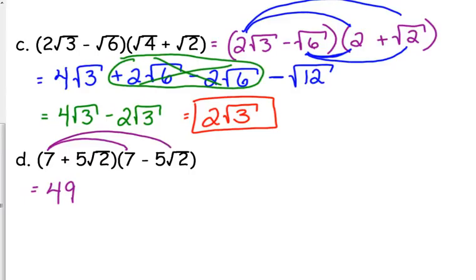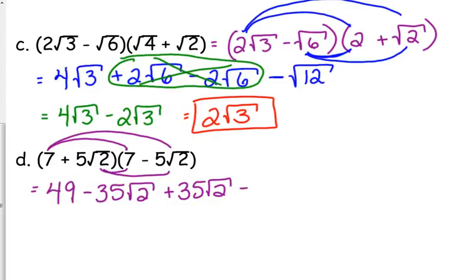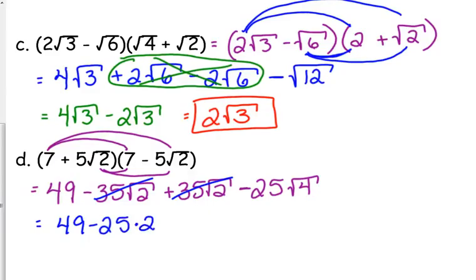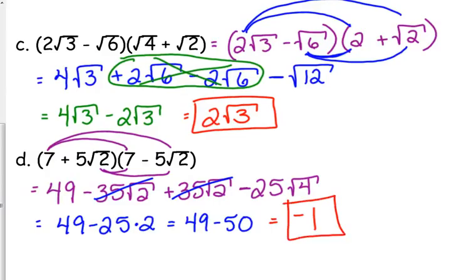So: 7 times 7 is 49. The outside gives us negative 35 square roots of 2. The inside gives us positive 35 square roots of 2. The last gives us positive 5 times negative 5 — which is negative 25 — times the square root of 2 times the square root of 2, which is the square root of 4, which is 2. Simplifying: the outside and inside cancel. That's 25 times 2, which is 50. So 49 minus 50 means our radical completely disappeared, and this is just equal to negative 1.